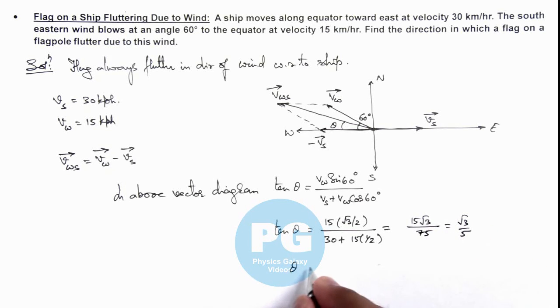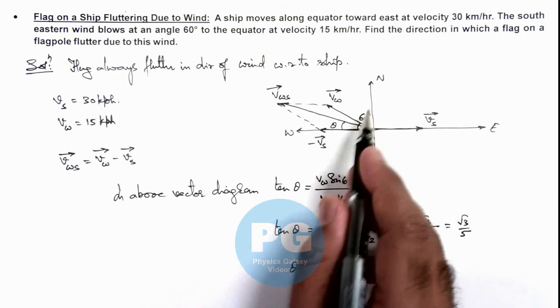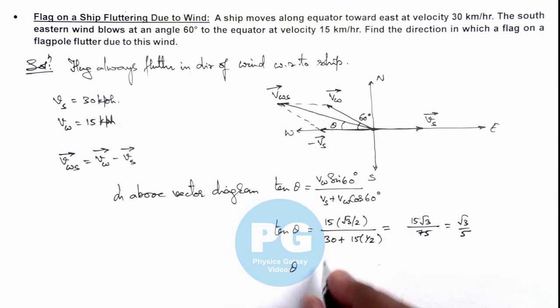So the value of theta toward north of west in which the flag will flutter is given as tan inverse of √3/5. That will be the result of this problem.